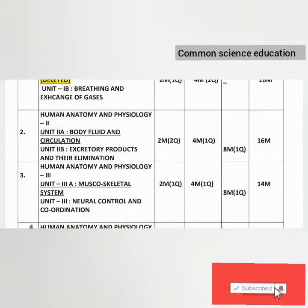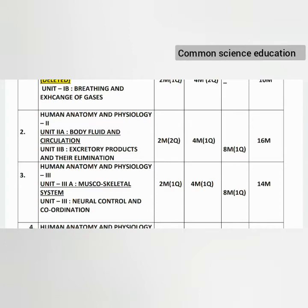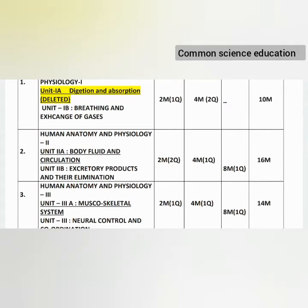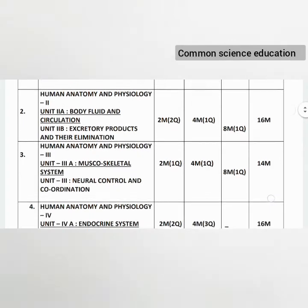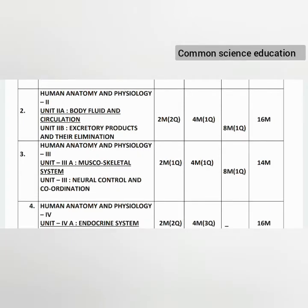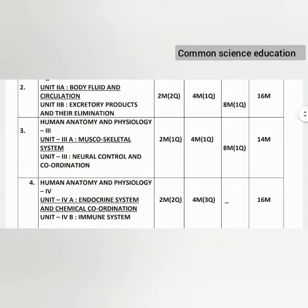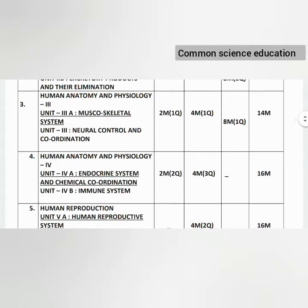Units 2 and 3 cover Body Fluids and Circulation, and Excretory Products and their Elimination. These have 2-mark questions (2 questions), one 4-mark question, and one 8-mark question, making a total of 14 marks for these two units.